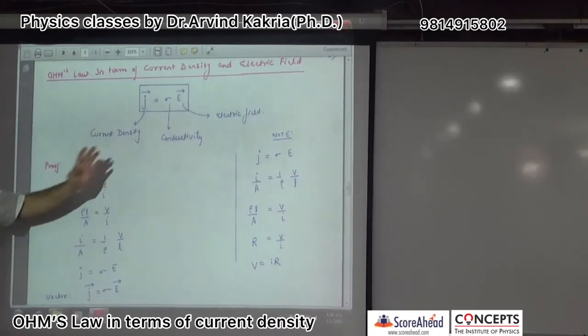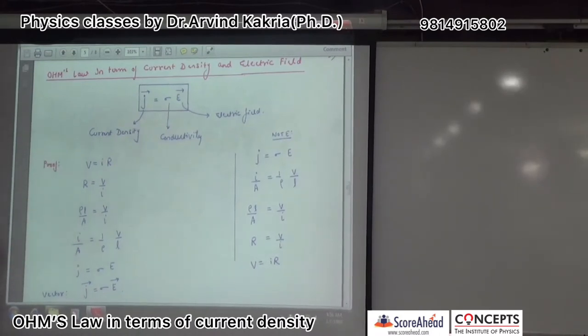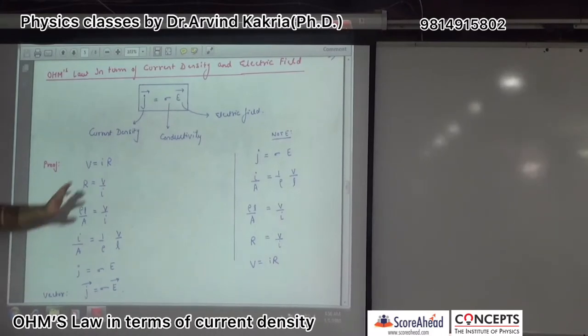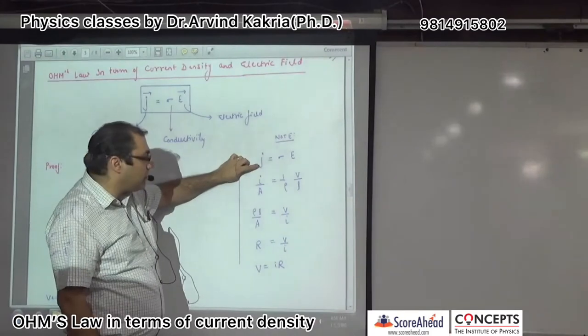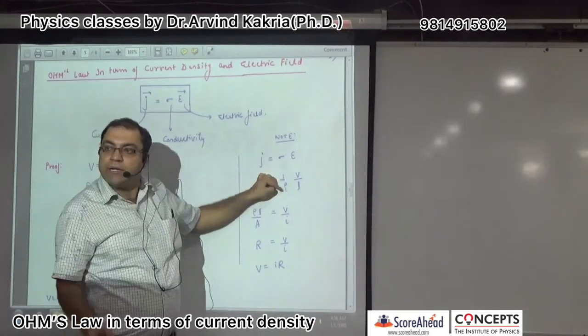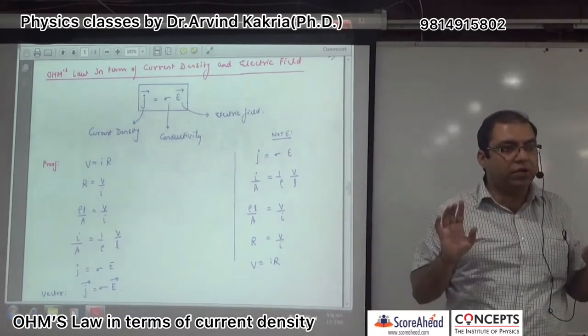You would say that Ohm's law is V equals IR. And what is written here? J equals σE. Right? So how do we do this? First, we write J equals σE. J means current by area. Sigma means one by rho. Electric field means potential difference divided by length of the conductor, V by L.